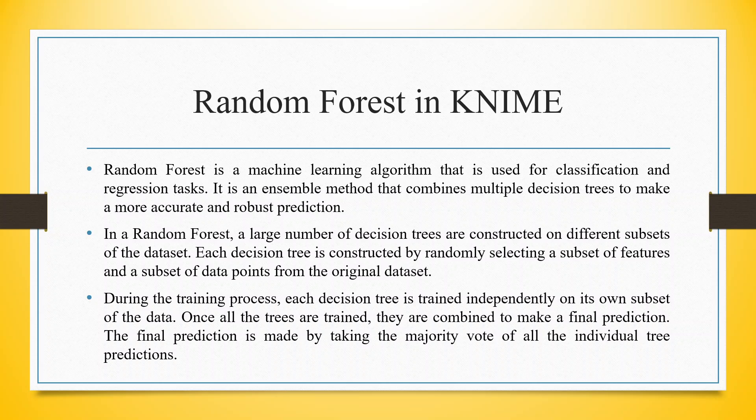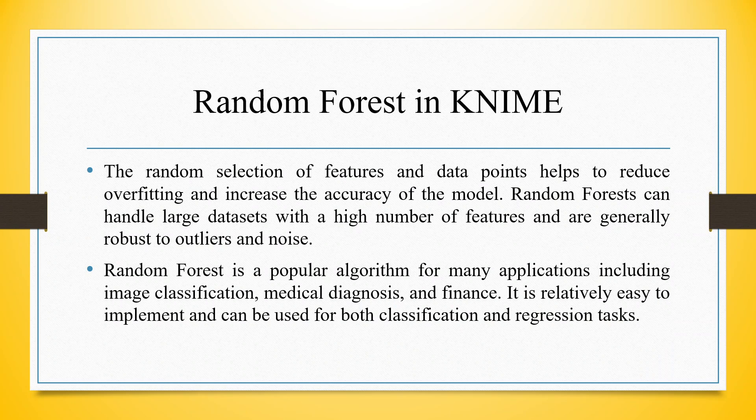Once all the trees are trained, they are combined to make the final prediction. The final prediction is made by taking the majority vote of all the individual tree predictions. The random selection of features and data points helps to reduce overfitting and increase the accuracy of the model.